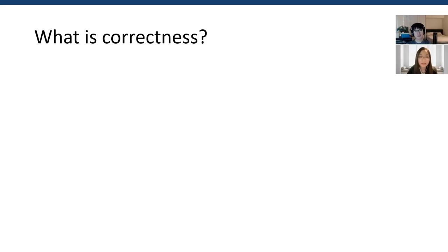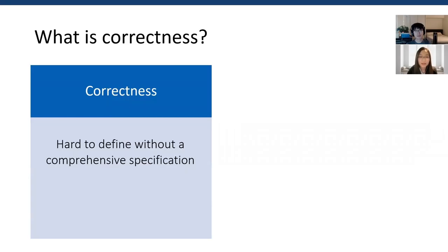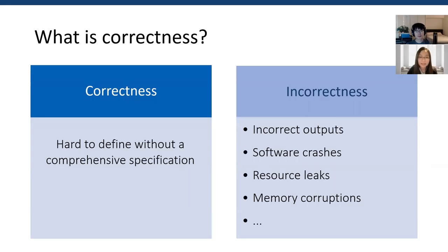People have different requirements on different types of software systems. What is correctness? It is hard to define without a comprehensive specification. But we do know a number of cases that are definitely incorrect, like incorrect outputs, software crashes, resource leaks, memory corruptions, and others.